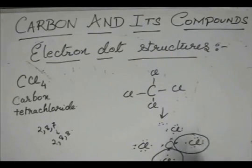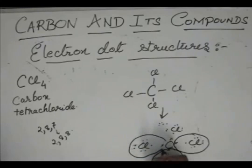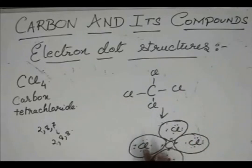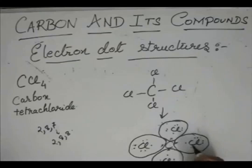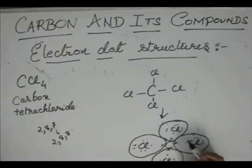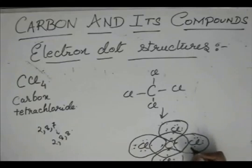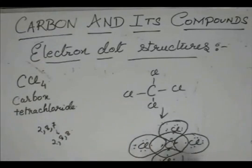Remember, no electron should be shared between these 2 chlorine atoms. They are totally independent. Make your circles accordingly — they should not take up any electron from an atom which is not of any use to it. For example, this circle should not contain an electron from another chlorine, or another electron from carbon. That would be wrong. Carbon should also not contain extra electrons of chlorine — it should contain only one electron per bond. This is the electron dot structure of CCL4.